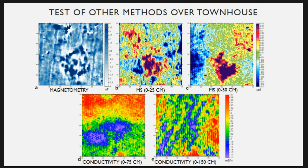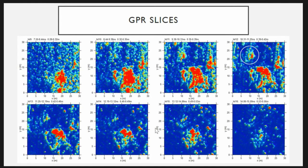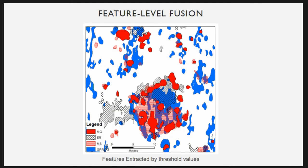We haven't figured out what the structure is from geophysics alone, but it does show magnetic susceptibility. The shallower data shows the southern corner and the deeper data shows it better. Conductivity data shows part of the structure in the shallower data, but it goes below detection at depth. Ground penetrating radar shows the structure quite well, and as you get deeper it also shows evidence of another smaller structure that wasn't very visible in the other data sets.